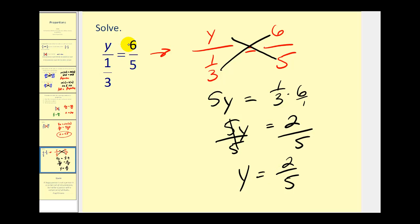Let's go ahead and check this one. We already determined that one-third times 6 was equal to 2. So if y is equal to 2-fifths, 2-fifths times 5, or 5 over 1, would also give us 2. So it checks.